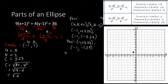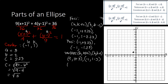For vertices: (h, k plus a) and (h, k minus a) — that is (negative 1, 1 plus 3) and (negative 1, 1 minus 3), giving vertices at (negative 1, 4) and (negative 1, negative 2).